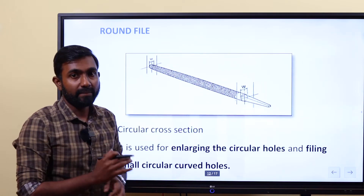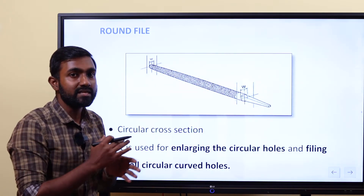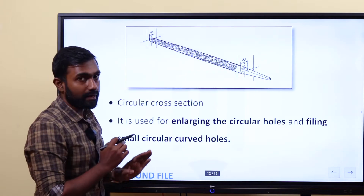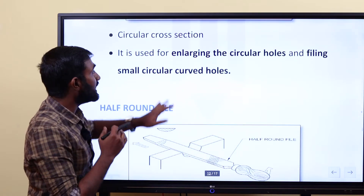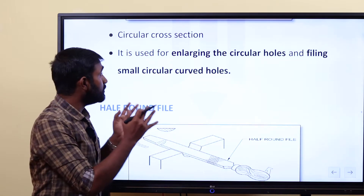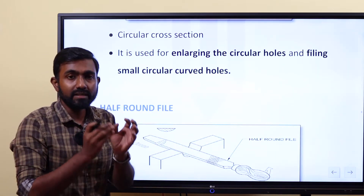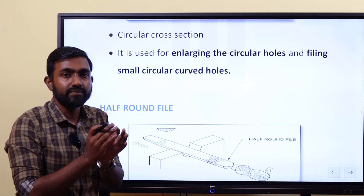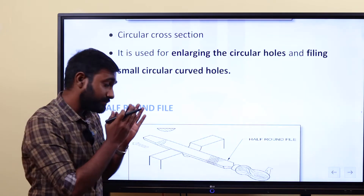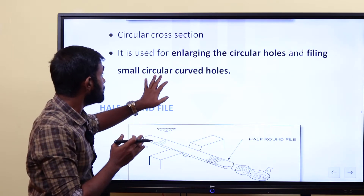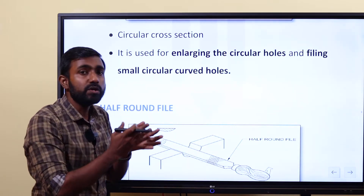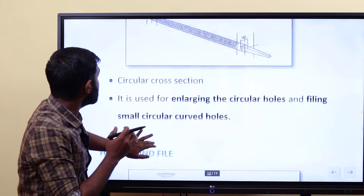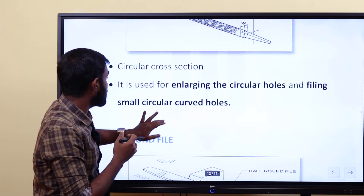Next is round file. Round file has a circular cross section. It is used for enlarging circular holes and filing small circular curved holes. When we have a circular hole and need large enlargement, we have to use round files.